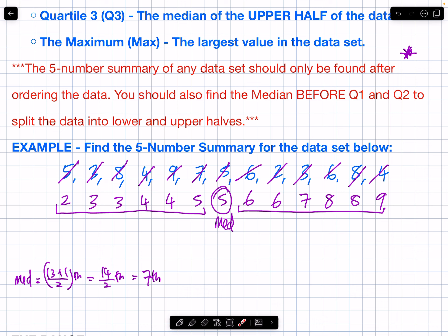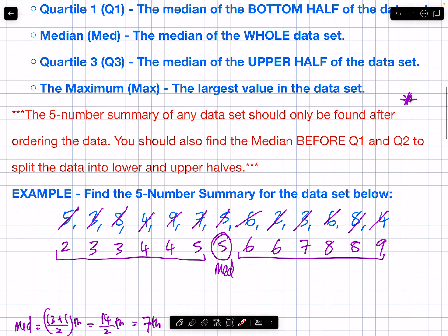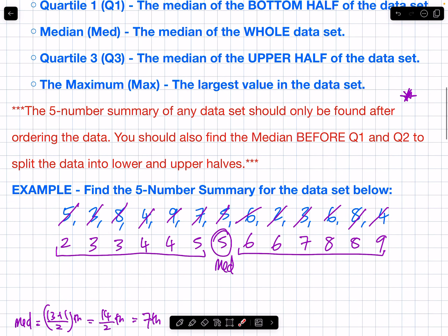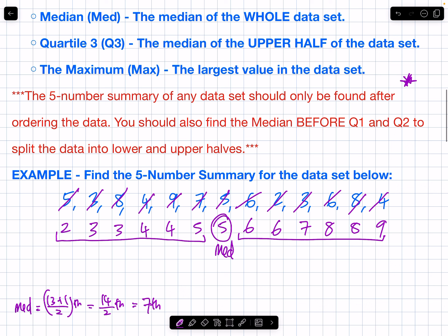The upper and lower half designation is a bit easier when your median falls between two numbers, since there's no single number in the middle. The designation of upper and lower half is easy when you have an even number of data. Now that we have the median, that's one of the five number summary. I can very easily find the min — it's 2 — and the max is 9.